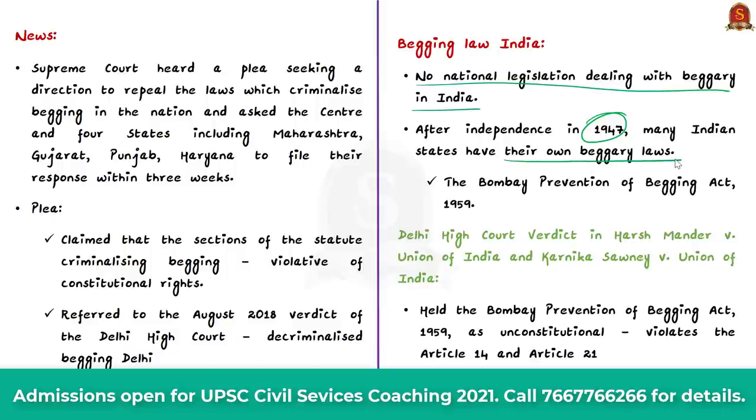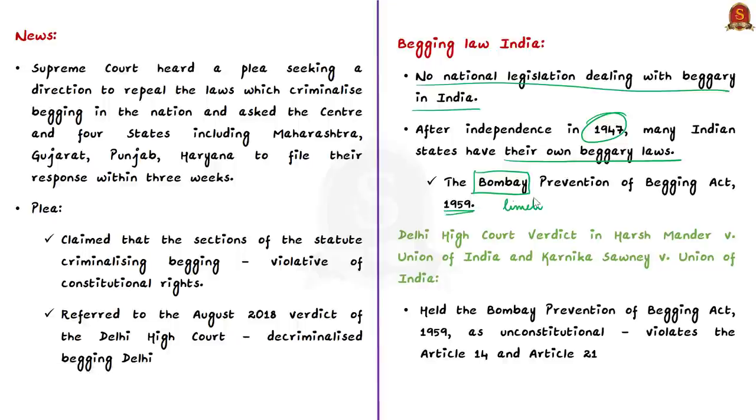Of all the state enactments the Bombay Prevention of Begging Act of 1959 has been in the limelight, especially because of its application in the metropolis of Mumbai and the subsequent extension to the union territory of Delhi in 1960. But the Delhi High Court in a landmark judgment titled Harsh Mandar vs the Union of India and Karnika Saune vs the Union of India held the Bombay Prevention of Begging Act of 1959 as unconstitutional on the grounds that it violates Article 14 and Article 21 of the Indian Constitution.